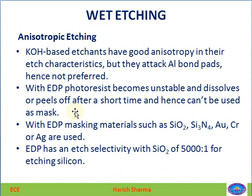A problem with EDP is that normal photoresist cannot be used as a masking layer, because the photoresist will dissolve or peel off in a short time in EDP. Instead, masking layers of SiO2, Si3N4, aluminum, gold, chromium, or silver are used. EDP has an etch selectivity for SiO2 of 5000:1, meaning if one part of silicon is etched, it will etch 5000 parts of silicon dioxide.